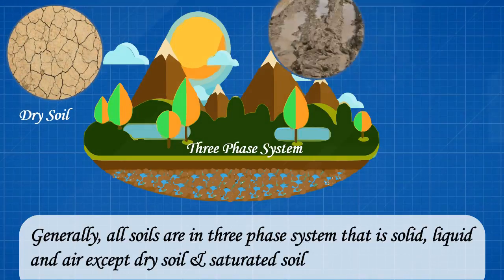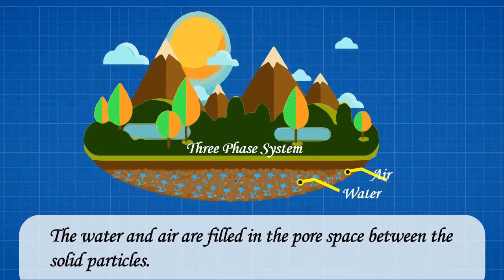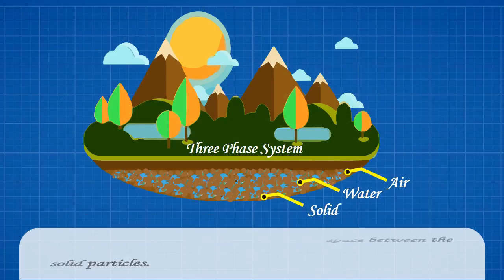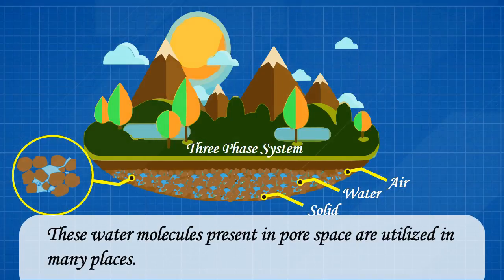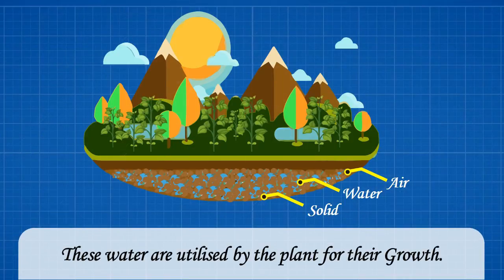Except in dry soil and saturated soil, the water and air are filled in the pore space between the solid particles. These water molecules present in pore space are utilized in many places. These waters are utilized by the plant for their growth.